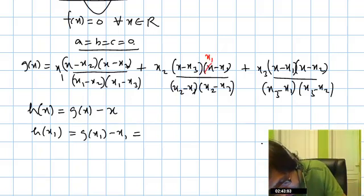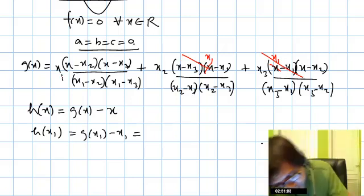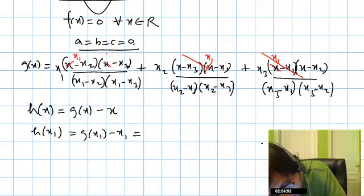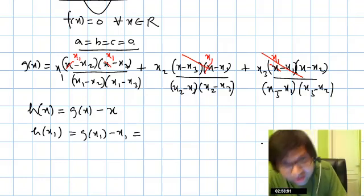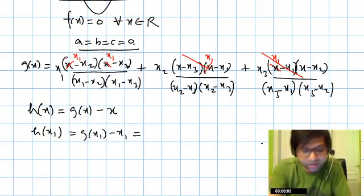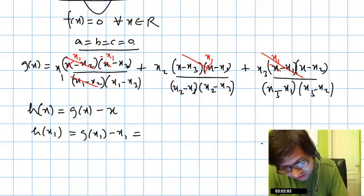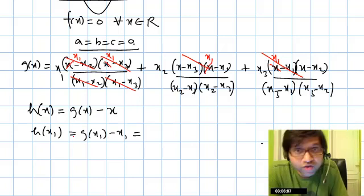You can see x₁ - x₁, this is also x₁ - x₁, so this whole expression becomes 0 when I replace x by x₁. And in this case, if I replace x by x₁, the (x₁ - x₂) cancels out, and this cancels with this. So the only leftover part is x₁, so g(x₁) is x₁.